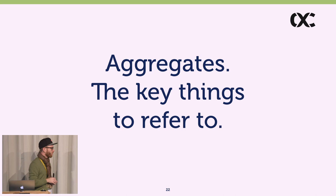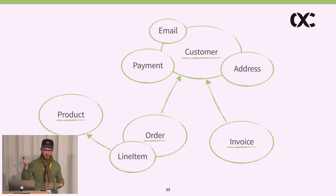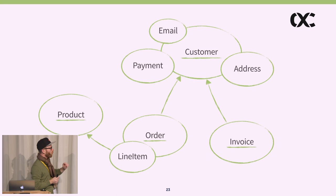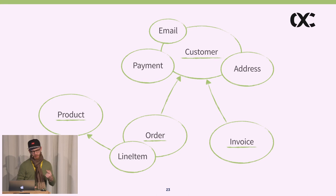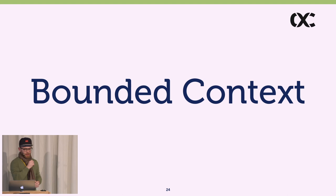The other important thing is that aggregates are what you refer to — you always refer to the aggregate root. The order refers to the customer, not to nested payment details. There's a note in the book: when you actually refer to another aggregate's root, you can't assume strong consistency anymore. By pointing to those aggregates, you allow the aggregate itself to change because you just refer to the thing.